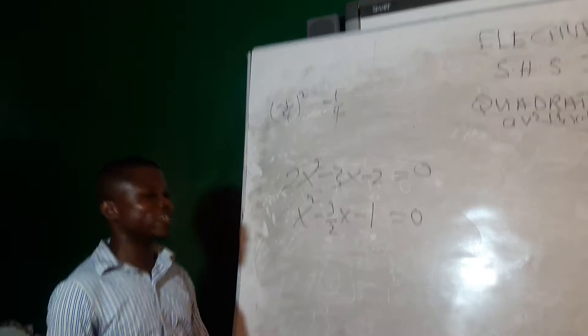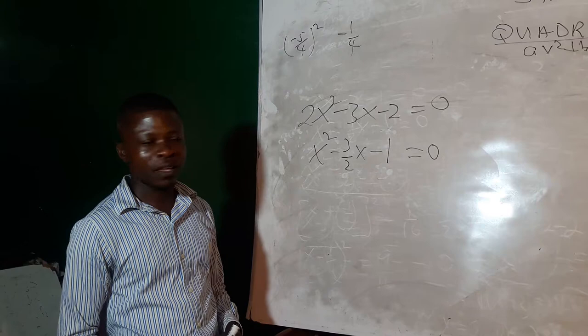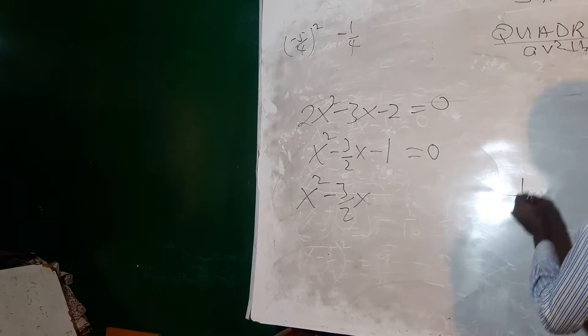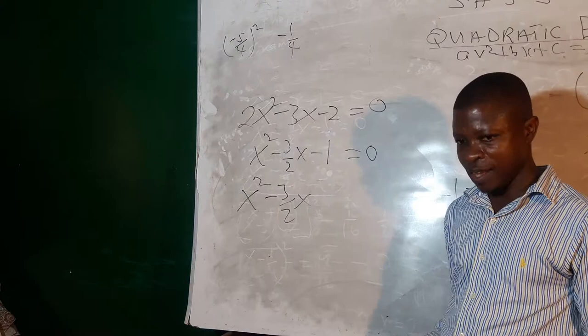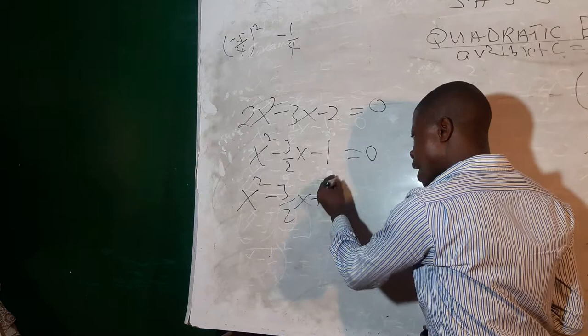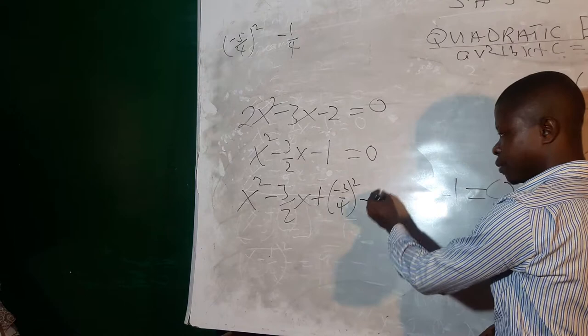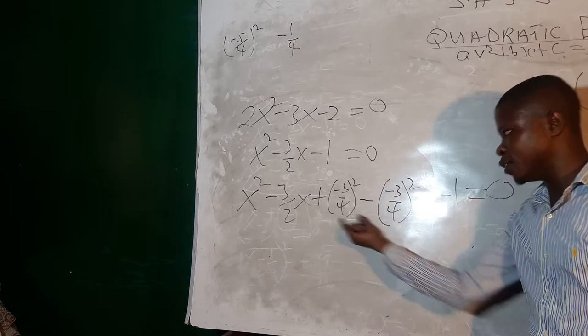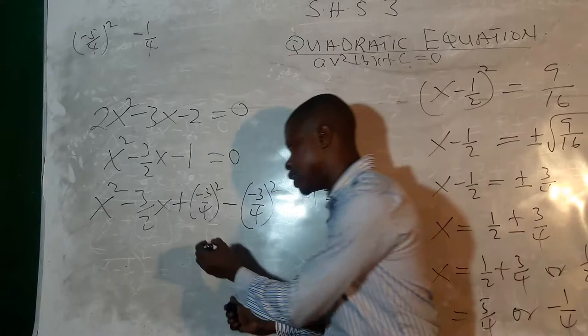Since it is not a perfect square, we need to make it one by bringing in our own constant c, which will be half the coefficient of x, squared. So we add plus negative 3 over 4 squared. But we don't want to change the given equation, so we must also subtract the same value — negative 3 over 4 squared — so that the net effect is 0 and the equation is maintained.